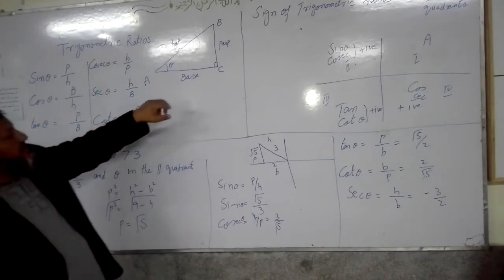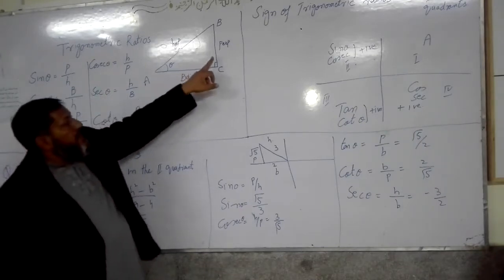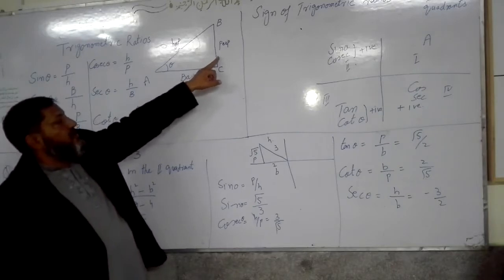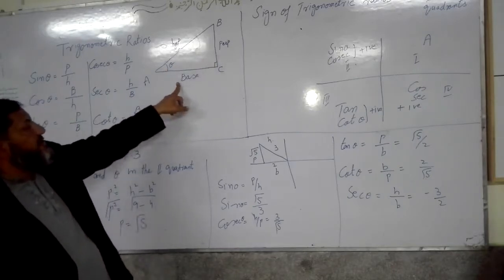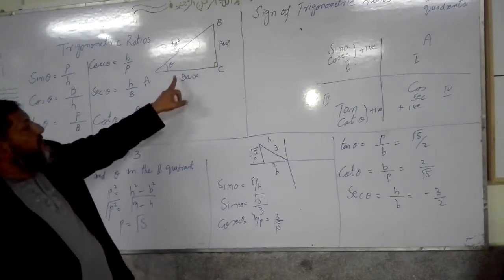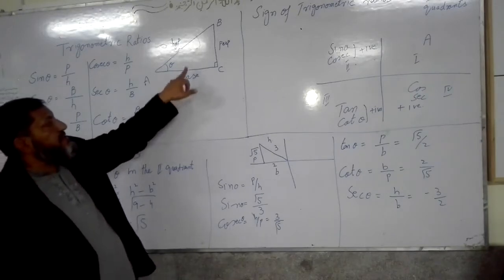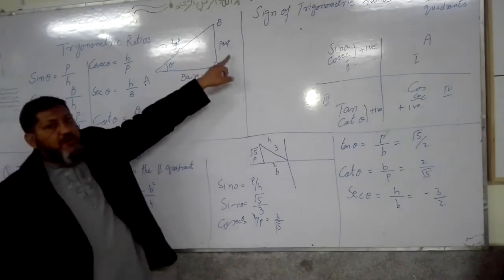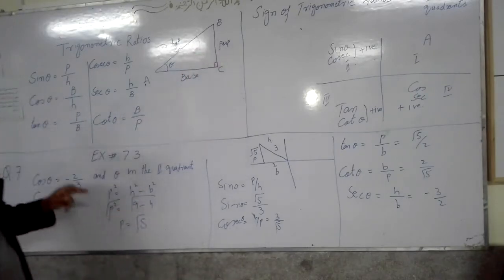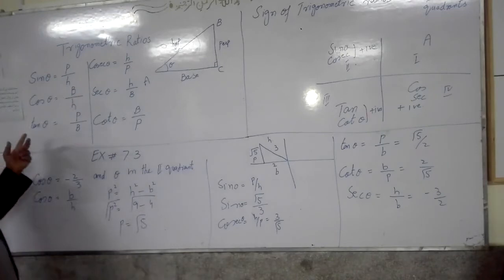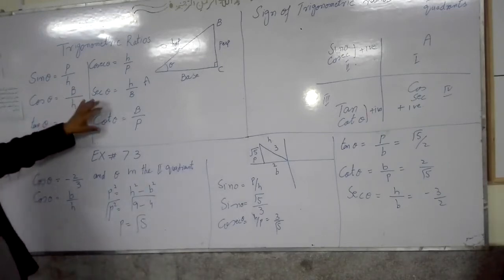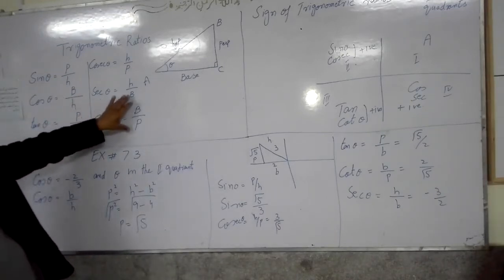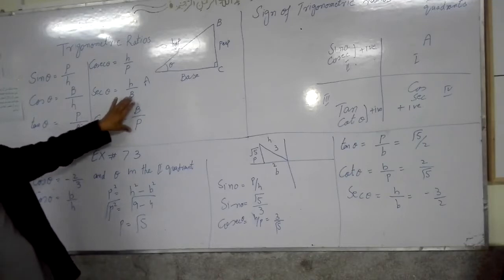Similarly, we have perpendicular over base equal to tan theta. The reciprocal — base over perpendicular — is the reciprocal of tan theta, which equals cotangent theta: cot θ = base / perpendicular.